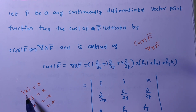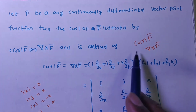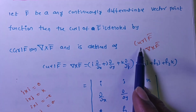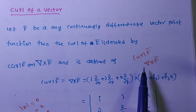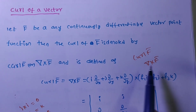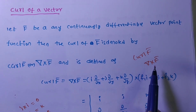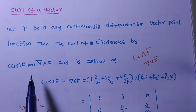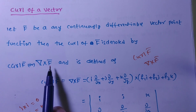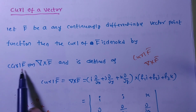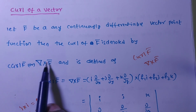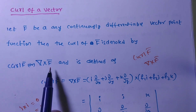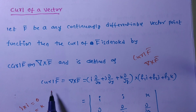This cross product is nothing but a rotation. Cross gives a rotational result. So you can say that curl is nothing but a rotation of the vector. Curl of a vector we denote with curl f̄ and also del cross f̄.